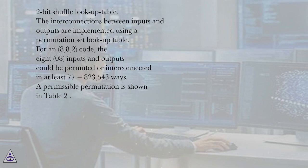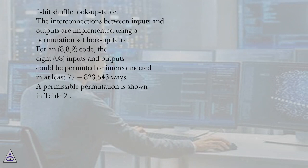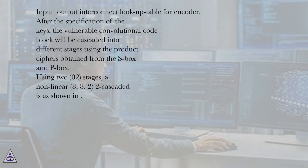The interconnections between inputs and outputs are implemented using a permutation set lookup table. For the N,8,8,2 code, with V8 and O8, inputs and outputs could be permuted or interconnected in at least 7^7 = 823,543 ways. A permissible permutation is shown in Table 2: the input-output interconnect lookup table for the encoder.